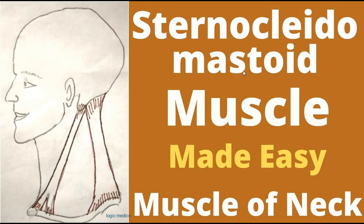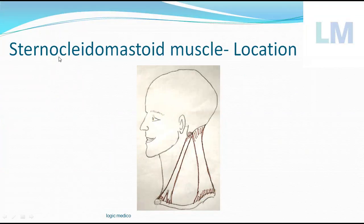The sternocleidomastoid muscle is one of the muscles of the neck. The neck in three dimensions is a cylindrical structure, but on a side profile it is quadrangular. This quadrangular neck has an obliquely oriented muscle called the sternocleidomastoid. If you twist your neck to the right or left side, you can see this muscle becoming prominent.